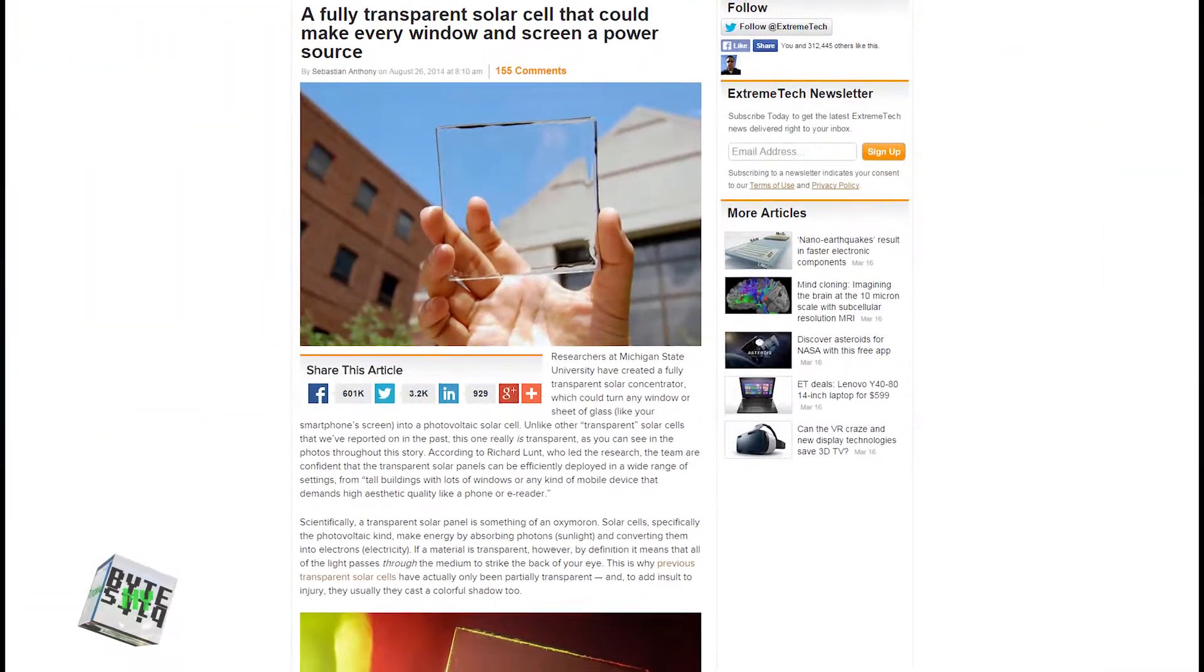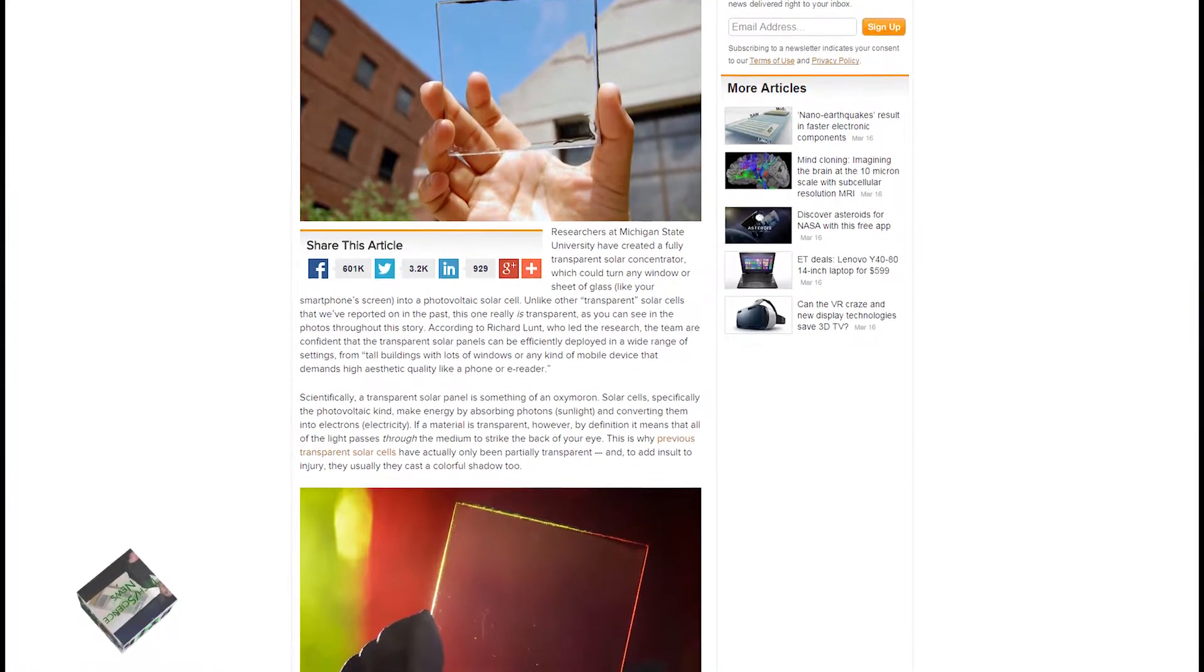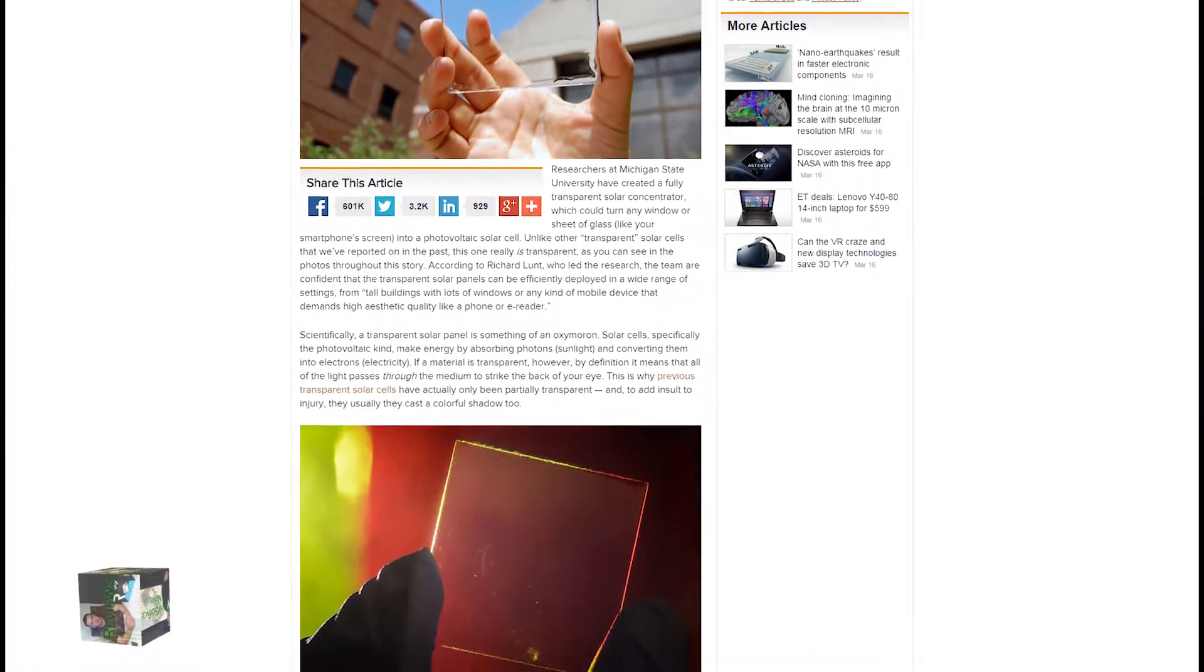Transparent solar cells have been a pipe dream for a while now. The concept itself is actually a little tricky, because to gather solar energy, you need to absorb the light. They have made tinted windows that are semi-transparent before, but they only get around 7% efficiency and they cast weird colored shadows while they're doing it. Well, Michigan State researchers came up with a way to absorb non-visible light to collect solar energy without interfering with regular light.